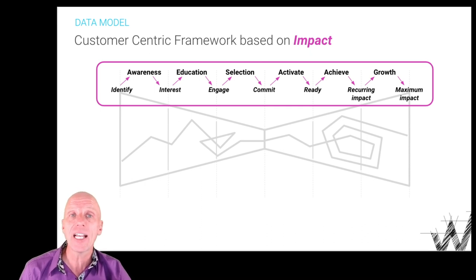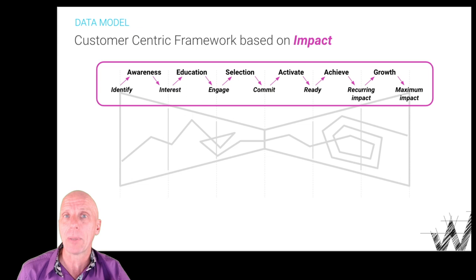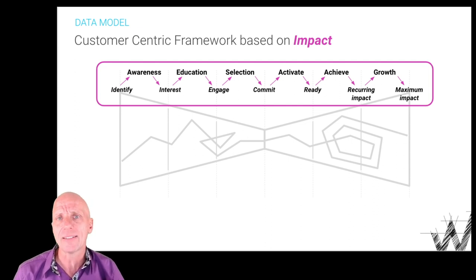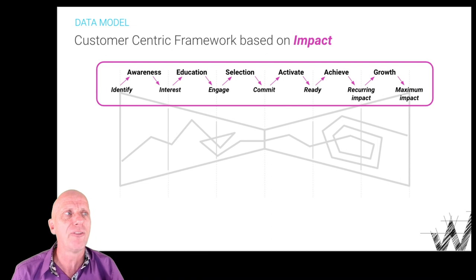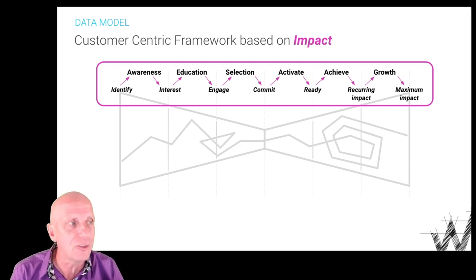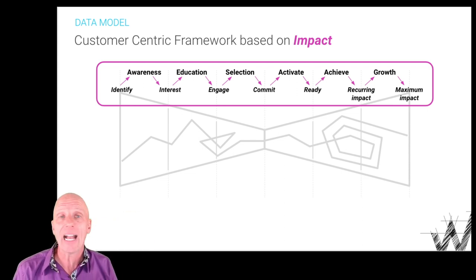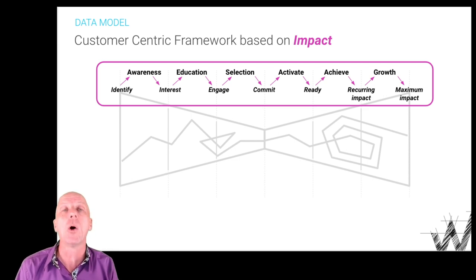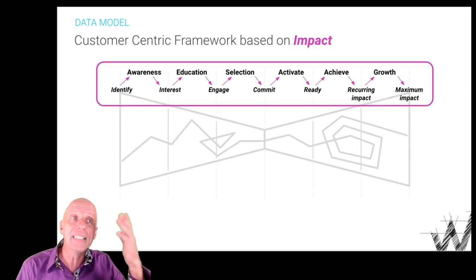We help them with education on the problems, the solutions, the different options. They become very engaged. As they go through the engagement process, they are picking a choice — between us and a competitor, between us and no action, or an alternative way. Finally, they commit. As they commit, they need to activate. In a platform it may take a week to get onboarded; for activation it may take a few seconds — you click, you install. Once the option is enabled, you start to achieve the impact every day, every hour, every week. As you expand it, you want more of it, you renew the contract, and you eventually end up at maximum impact. That is the impact journey.